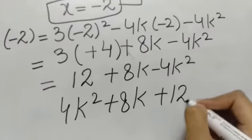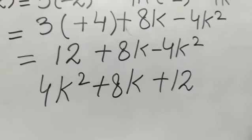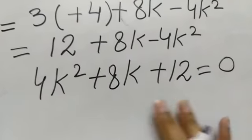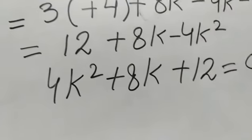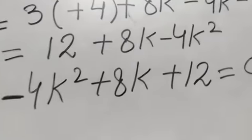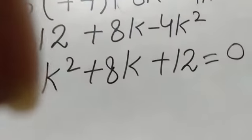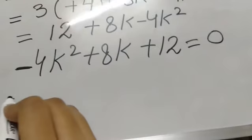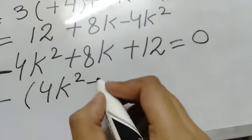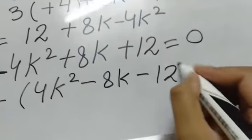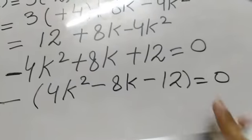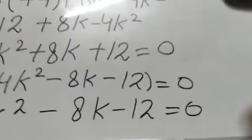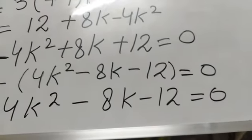We arrange the equation as: 4k squared minus 8k minus 12. Now we will find the factors of this equation. We will take it equal to 0 and find the factors, then we will have the k value. We have to factorize this expression. We will apply the mid-term breaking method. First, we will take minus sign common, giving minus(4k squared minus 8k minus 12) equals 0, which simplifies to 4k squared minus 8k minus 12 equals 0.